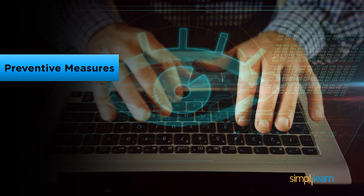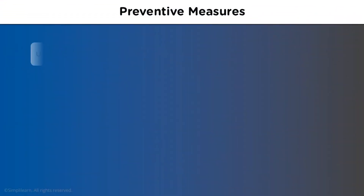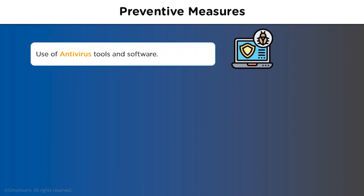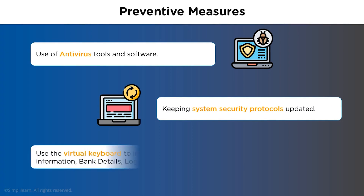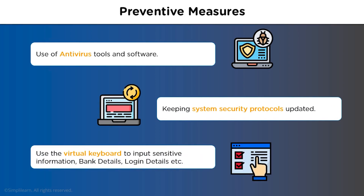To prevent a system from getting infected by the key logging program, consider the following points. First, use antivirus software or tools which can prevent malicious programs from entering the system. Second, keep system security protocols regularly updated — this is also a good habit. Lastly, use a virtual keyboard to input sensitive data, which may include bank details, login details, or passwords related to different websites.